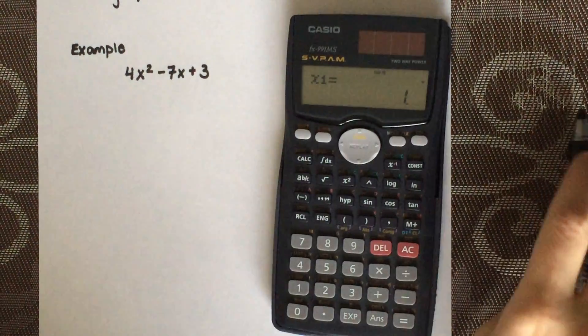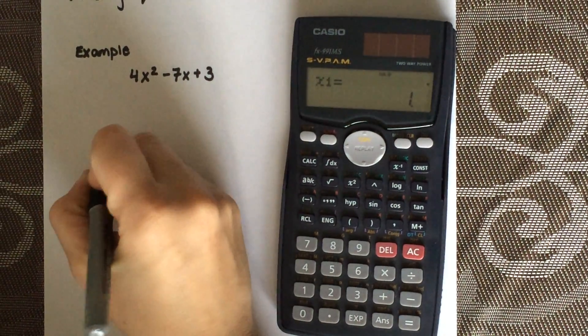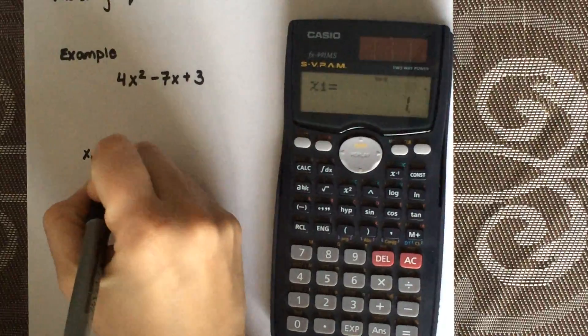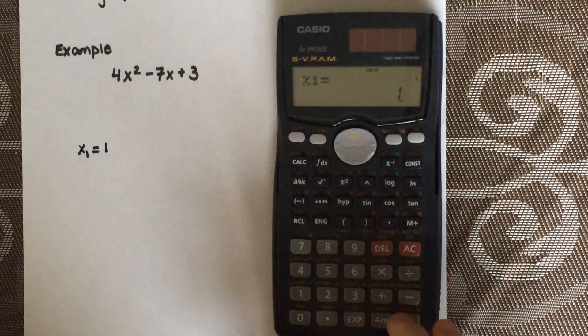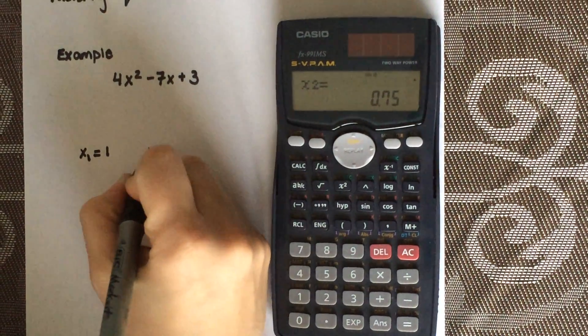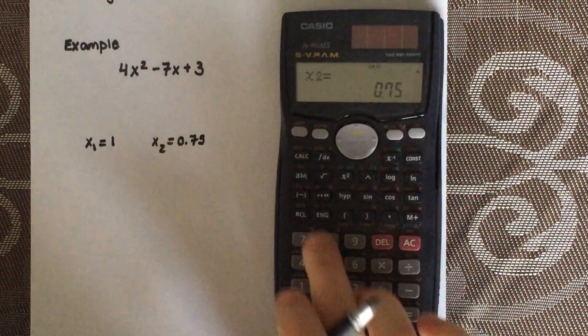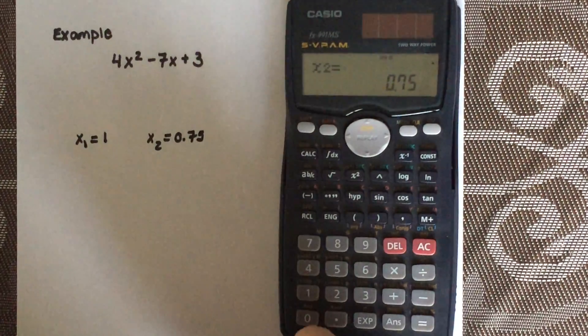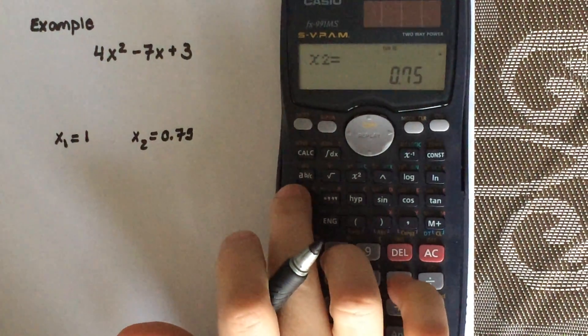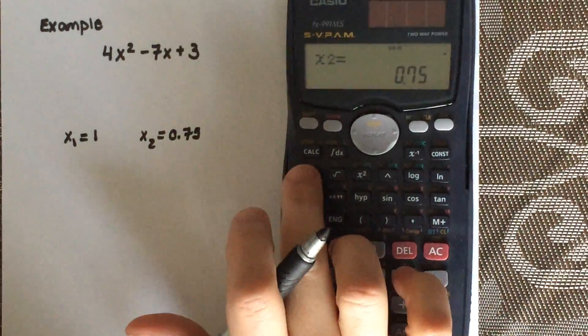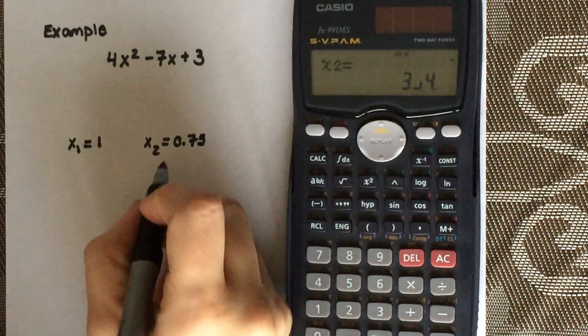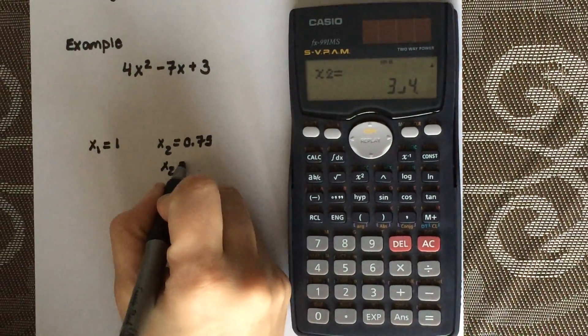You'll notice it's going to say X equals 1, so I'm going to write that down. That's the first value. And X2 equals 0.75. I want to change that into a fraction. So you're going to select this button here, which is A, B over C. Converts it into a fraction, so it's actually 3 over 4.